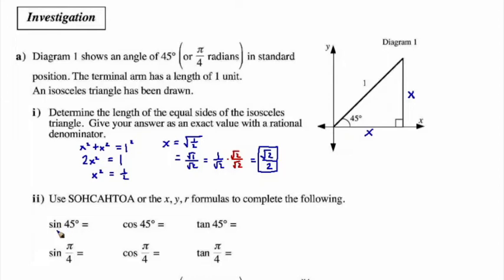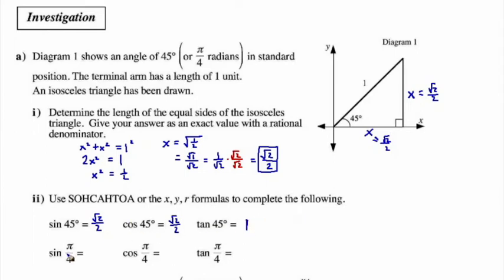We can now define the value of sine 45 degrees. Sine of 45 degrees is the opposite over the hypotenuse — x over 1 — which is root 2 over 2. The cosine of 45 degrees is the adjacent side over 1, which is also root 2 over 2. And the tangent of 45 degrees is root 2 over 2 divided by root 2 over 2, which equals 1. Since pi over 4 radians is equivalent to 45 degrees, sine of pi over 4 is root 2 over 2, cosine of pi over 4 is root 2 over 2, and tangent of pi over 4 is 1.